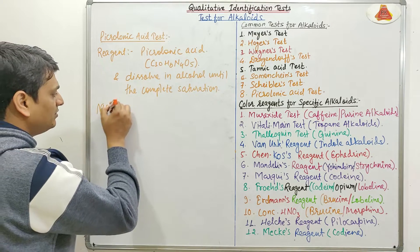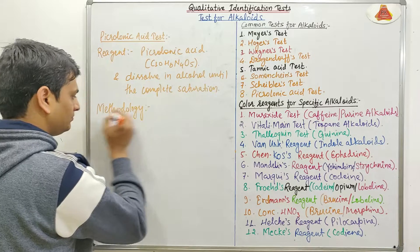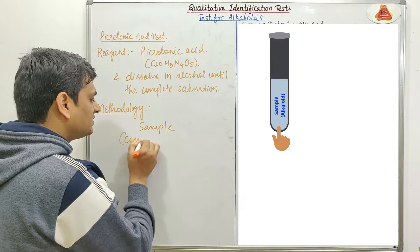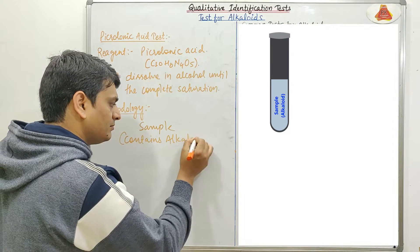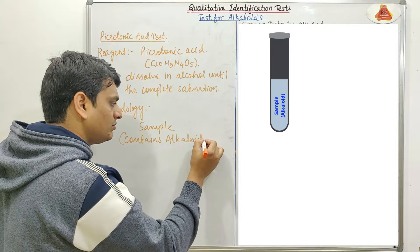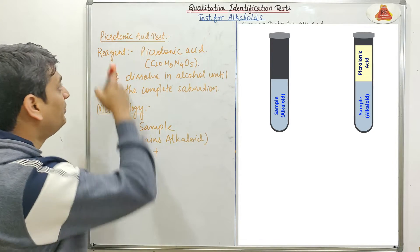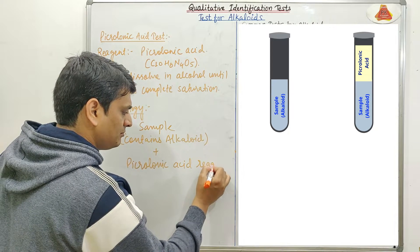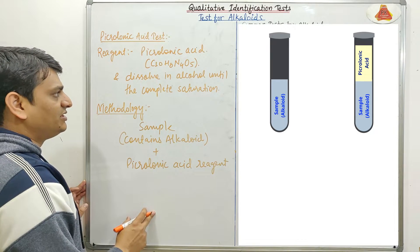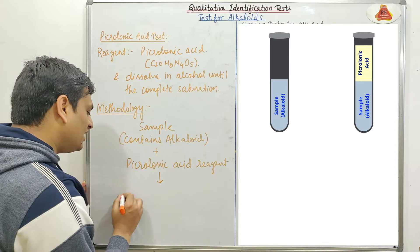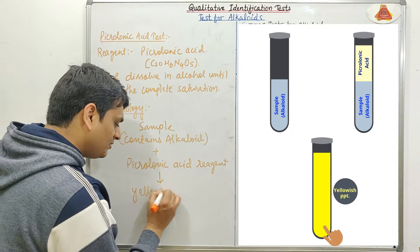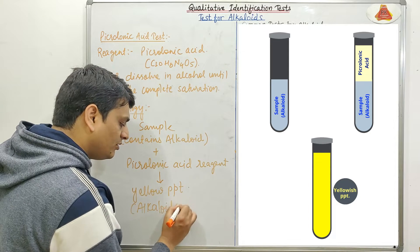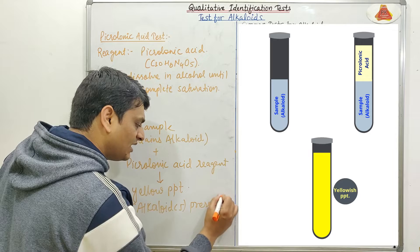Now coming to the methodology, which is very simple. In the methodology of this test, first we will take the sample which contains alkaloid. Now in this sample we will add the Picrolonic Acid reagent. This Picrolonic Acid reagent is the saturated solution of Picrolonic Acid in alcohol.